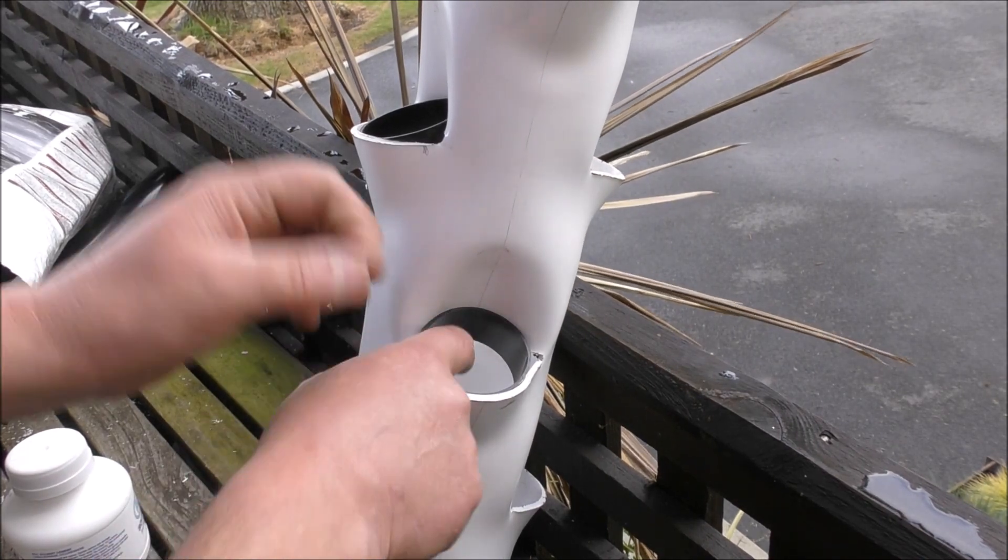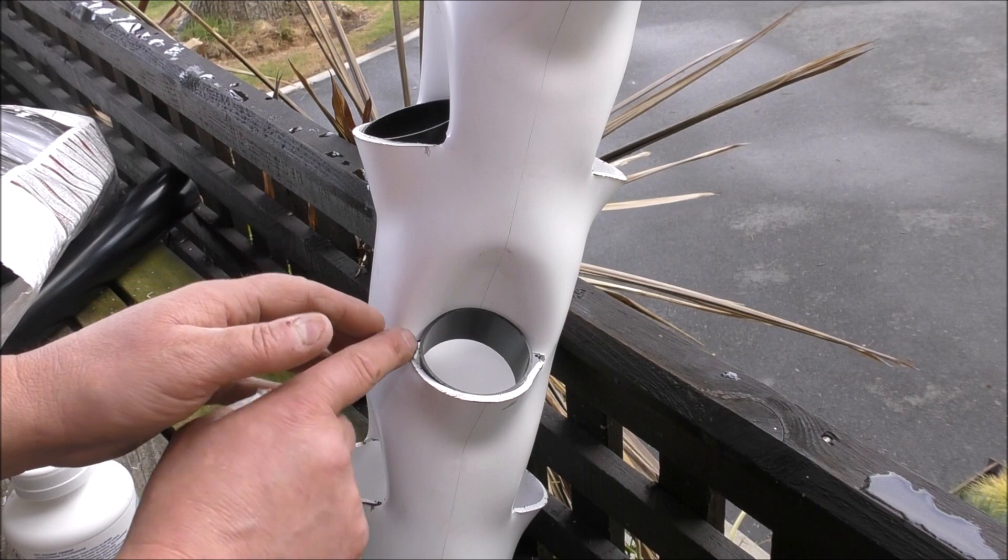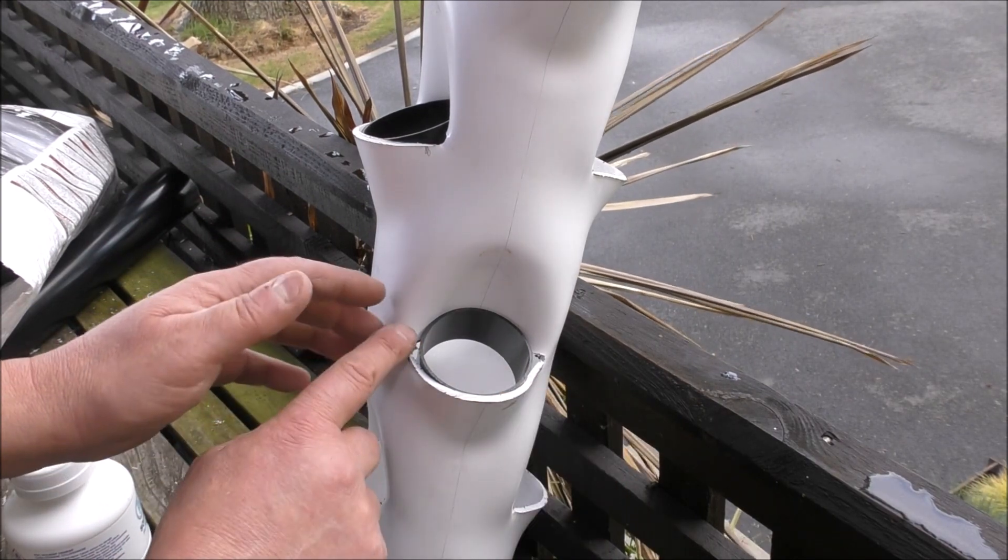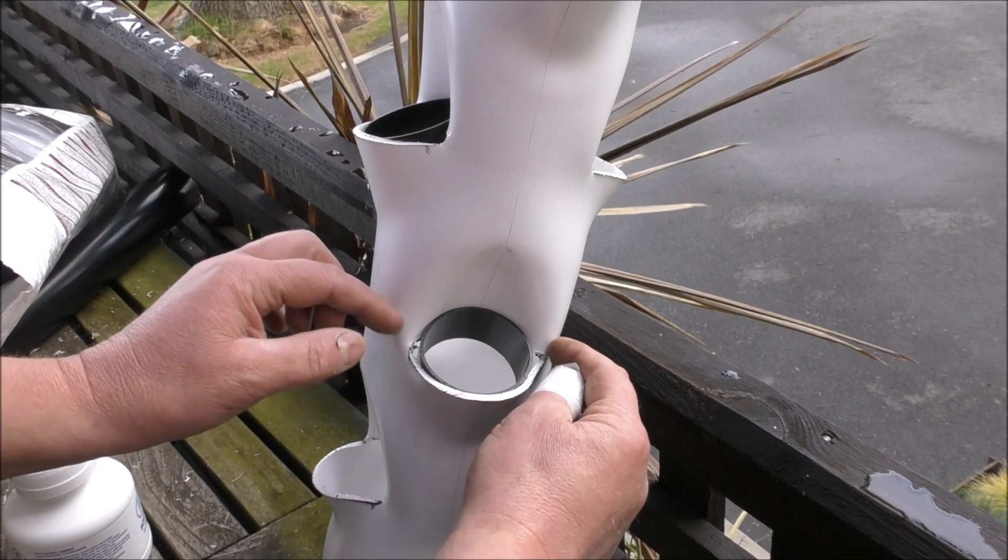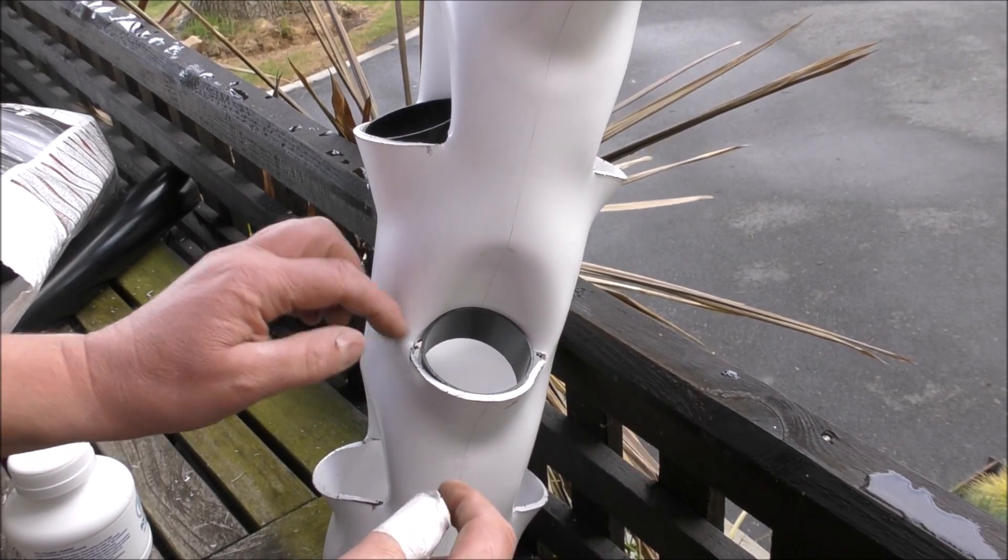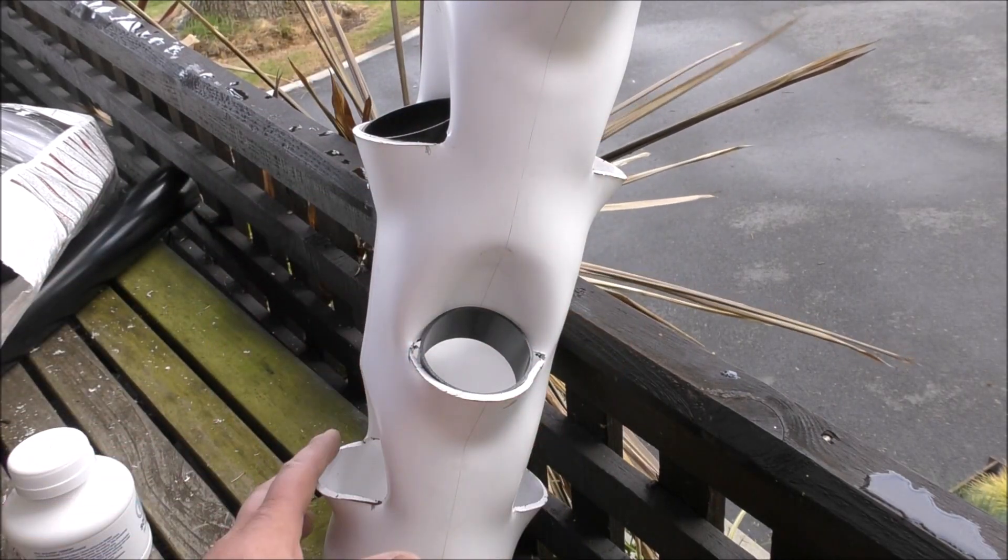And what that will do, it'll shed the water down the pipe. It'll kind of prevent it from coming out of the edges here because you can never get a perfect circular hole. It's always going to have the little smiley bits at the side here with little holes in. That little collar will direct the water down the main pipe.